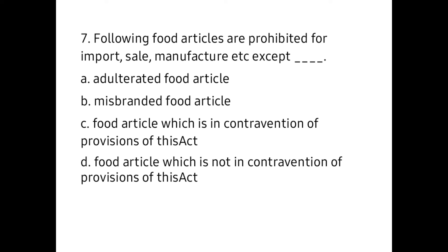Seventh one: The following food articles are prohibited for import, sale, manufacture, etc., except — A) The adulterated food article, B) Misbranded food article, C) Food article which is in contravention of the provision of this Act, D) The food article which is not in contravention of the provision of this Act. The correct answer is D.